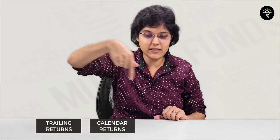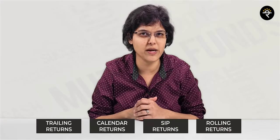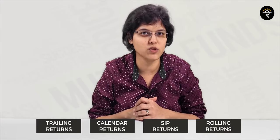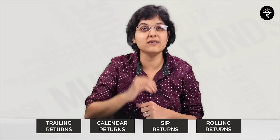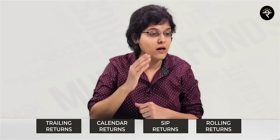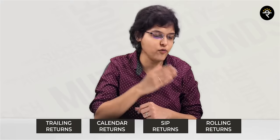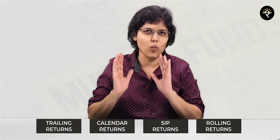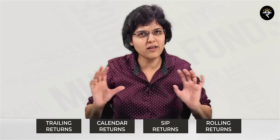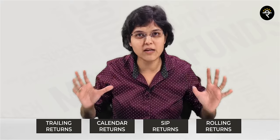Today we are going to judge a mutual fund based on the performance parameter — performance means how much returns has it given. These are the various types of returns based on which we can judge which mutual fund is good. The very first one can be a trailing return, second one is a calendar return, third one is an SIP return, and fourth one is known as a rolling return. Let's understand one by one what are the different meanings of all these.